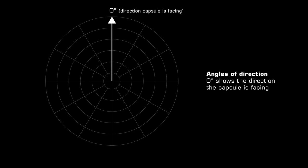Zero degrees indicates the direction in which the capsule is facing, which is usually the angle at which it is most sensitive to sound and produces the greatest output. The sides of the microphone are shown at 90 and 270 degrees and its back at 180 degrees.